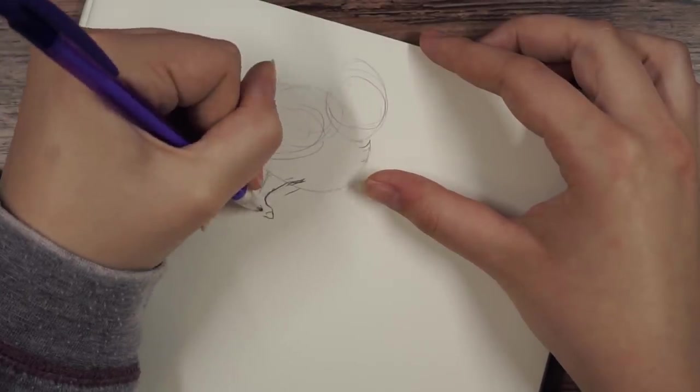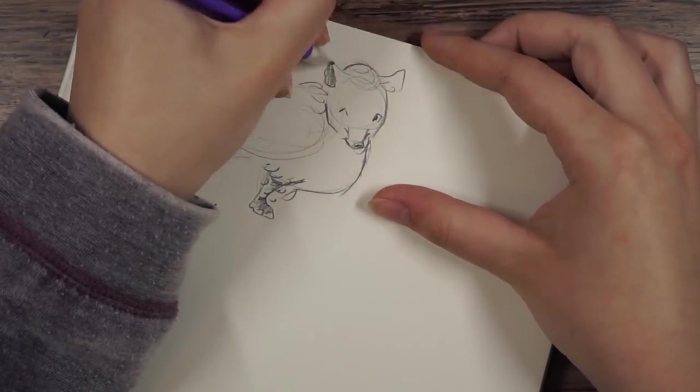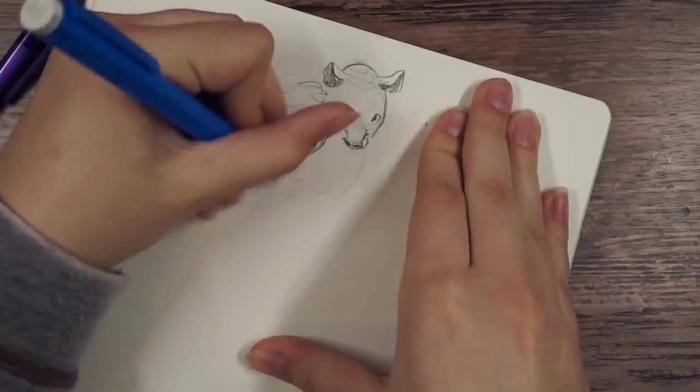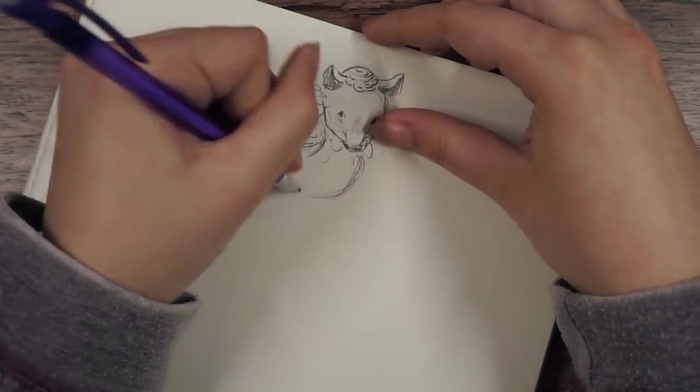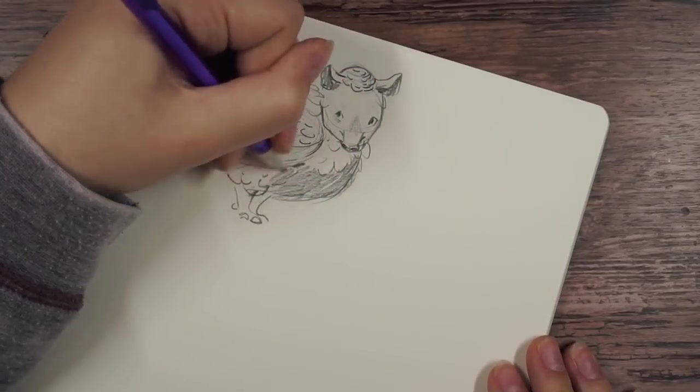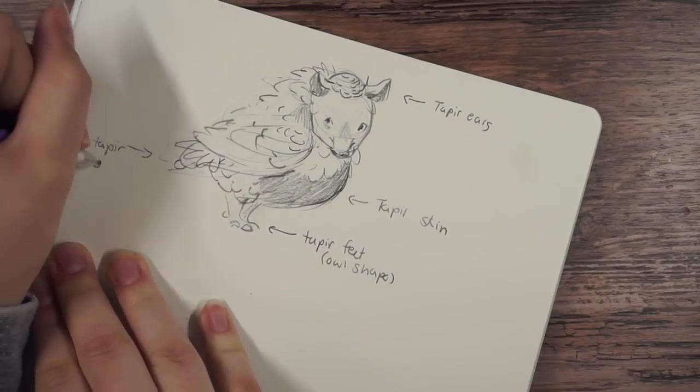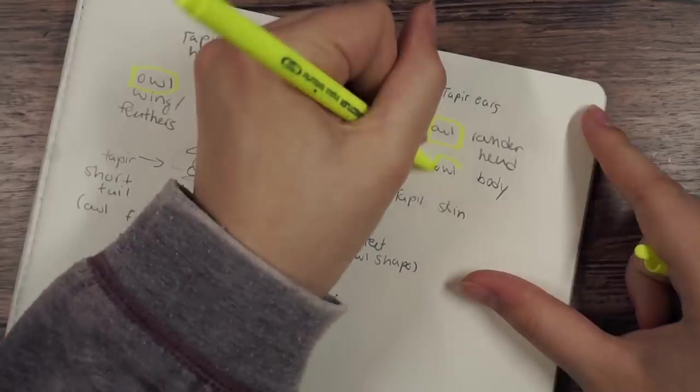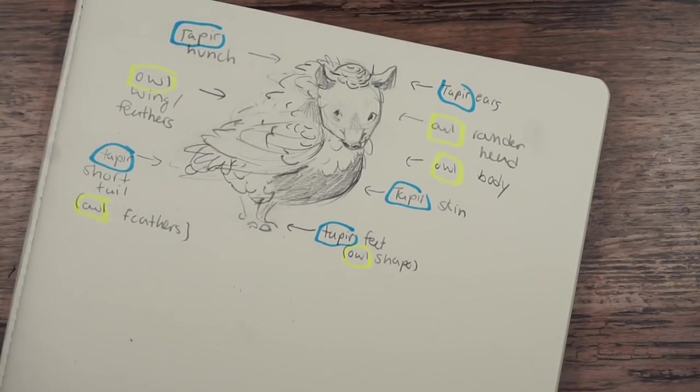So I took the shape of the snowy owl and then the way that the first animal looked, I kind of made the feet look like it. I added a little hunch on the neck. I made the face a little bit longer to compensate for it having a longer face than the owl. I kept the legs the same structure but I made them look like the other animal's feet. And I made the tail a lot shorter because the tapir has a really short tail. And I definitely want to keep the feathers. I thought it made it look nice and cute.